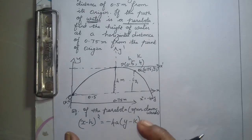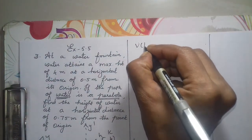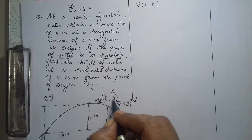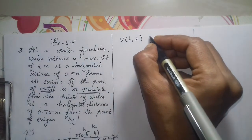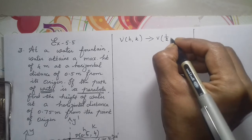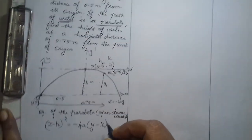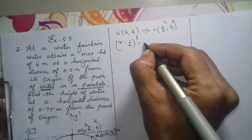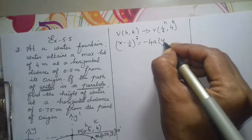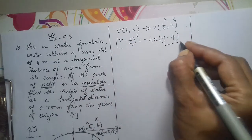In the equation, we will substitute the value of h and k. The vertex is not at the origin — we have the vertex (h, k). We have 0.5, 4. 0.5 we can write as 1/2. Therefore, vertex (h, k) is (1/2, 4) — this is h and this is k. Now let us substitute in this equation: (x − 1/2)² = −4a(y − 4). Name it as equation 1.